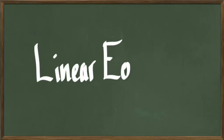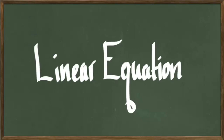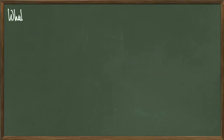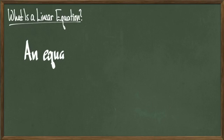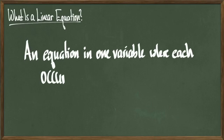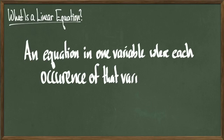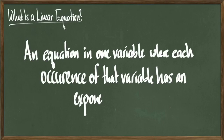Hey everyone, today we're going to talk about linear equations. The definition of a linear equation is actually pretty simple. Basically, it's an equation in exactly one variable, such that every time this variable shows up in the equation, it'll have an exponent of 1.